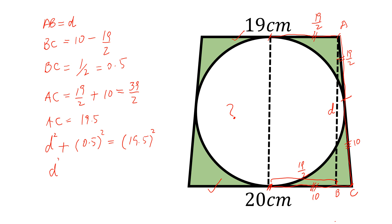We can simplify this and D square is equal to 19.5 square minus 0.5 square and after simplification, we get D square is equal to 380.